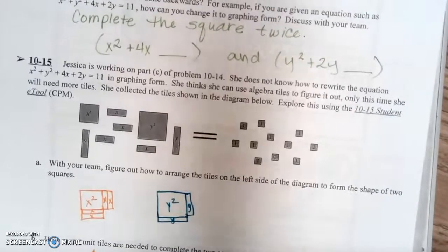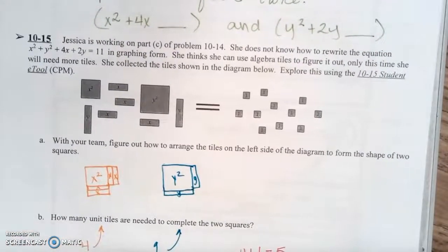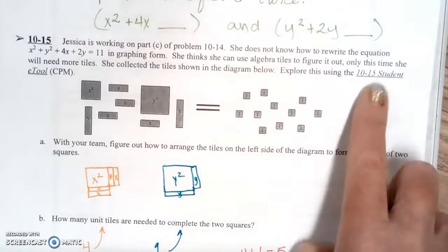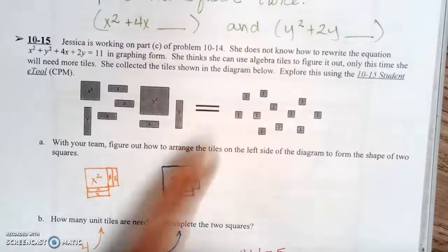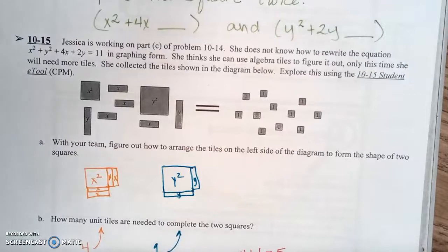And here's what that looks like. So for question 10-15, it says, Jessica is working on part c of problem 10-14. She does not know how to rewrite the equation x² + y² + 4x + 2y = 11 in graphing form. She thinks she can use algebra tiles to figure it out. Only this time, she will need more tiles. She collected the tiles shown in the diagram below. There's an e-tool for this if you want to use it. But I think just grouping them together will show you how to do it.